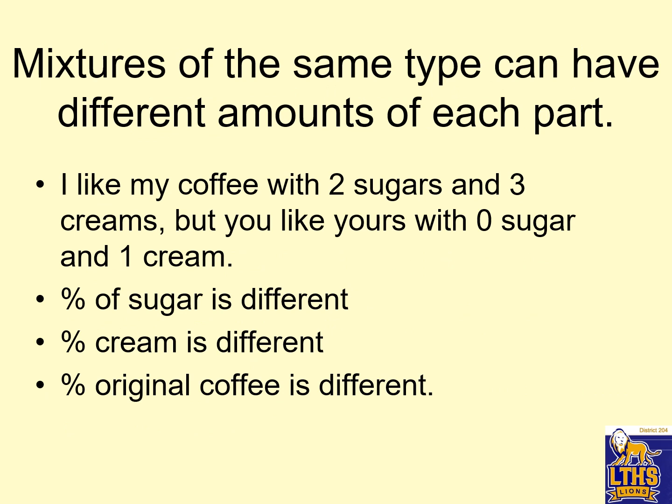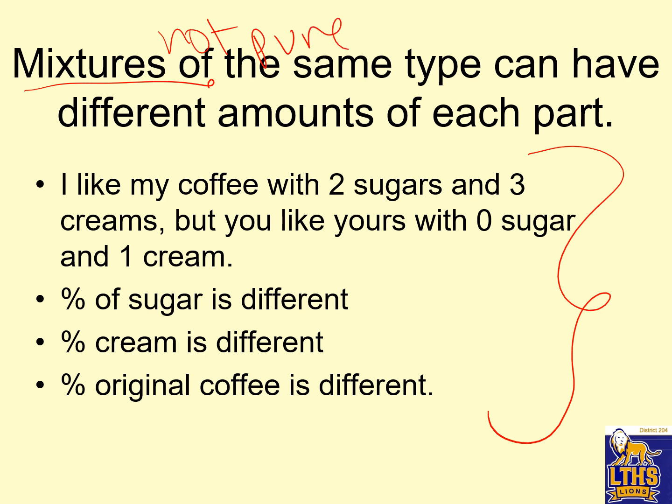When we talk about mixtures, the same type of mixture can have different amounts of each part, so they're not pure. Like coffee — you could have a different coffee than I can because we have a different percent of sugar, a different percent of cream, a different percent of the original amount. It's not always the same; that's what makes it a mixture, not pure. You can have different percentages of it.